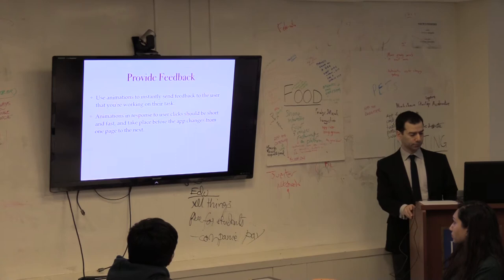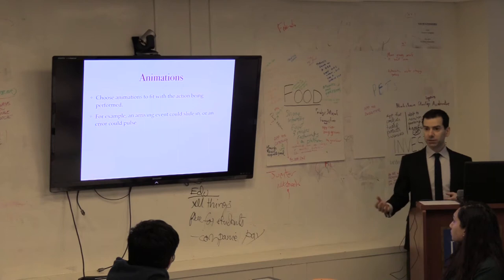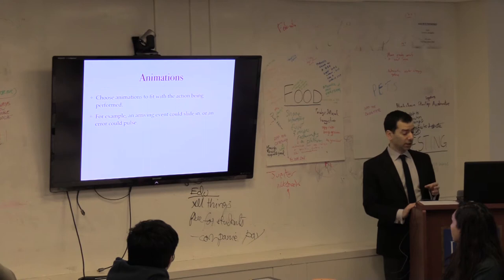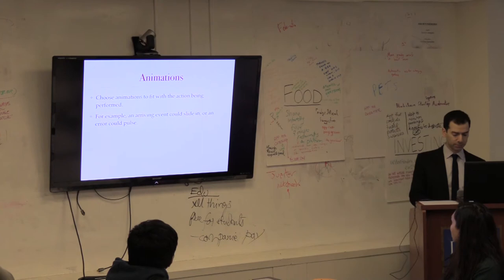Something else you can do is to choose an animation that fits with the action that they're performing. So if there's an event arriving, maybe the element of the screen that represents the event could slide in. If there's an error, maybe the error could pulse once. But choose animations that make sense given what's happening rather than just fading in without a clear link between the animation and what's actually happening.